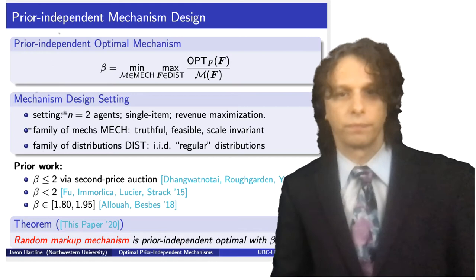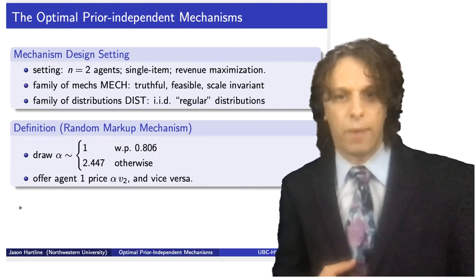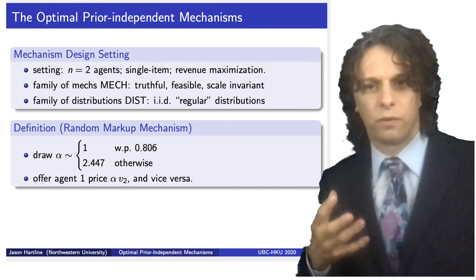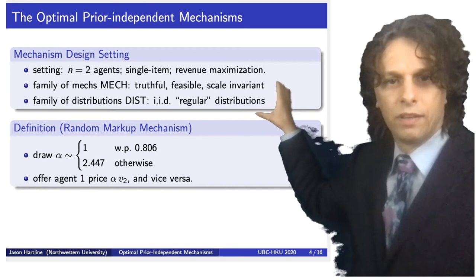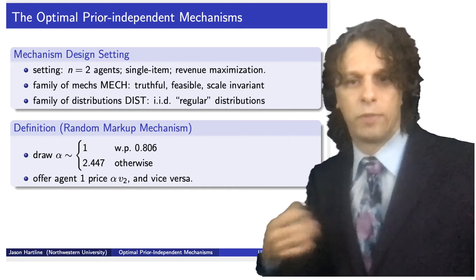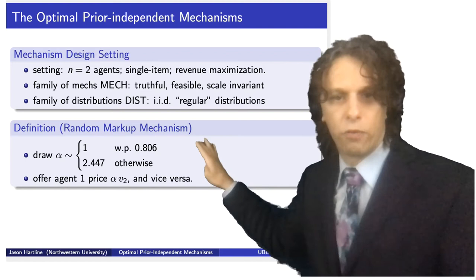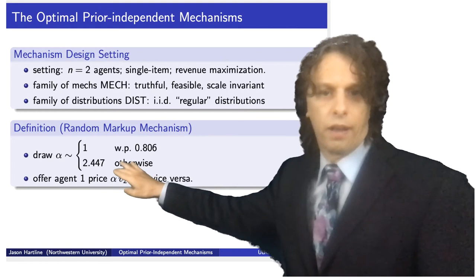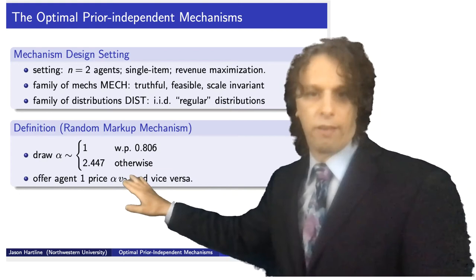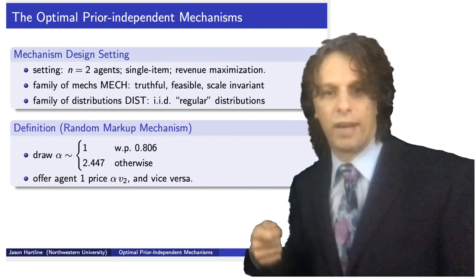We have actually solved this program for the single-item auction problem with two agents and the family of regular distributions. The prior independent optimal auction has approximation factor beta of about 1.9. The mechanism that optimizes that program — which I call the random markup mechanism — works as follows: draw alpha at random. With probability about 0.8, alpha equals one; otherwise alpha is about 2.5.